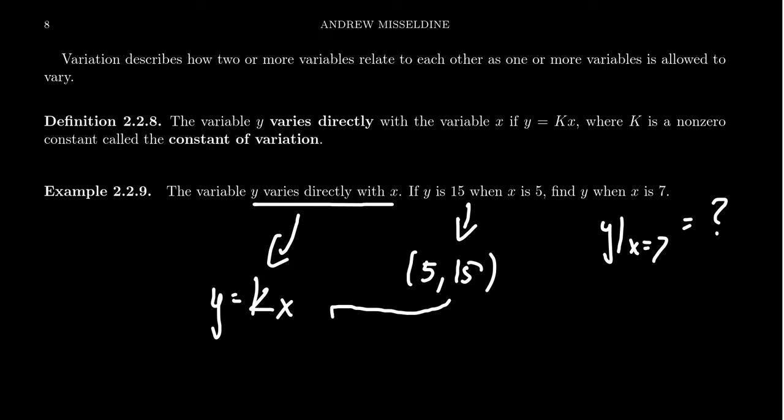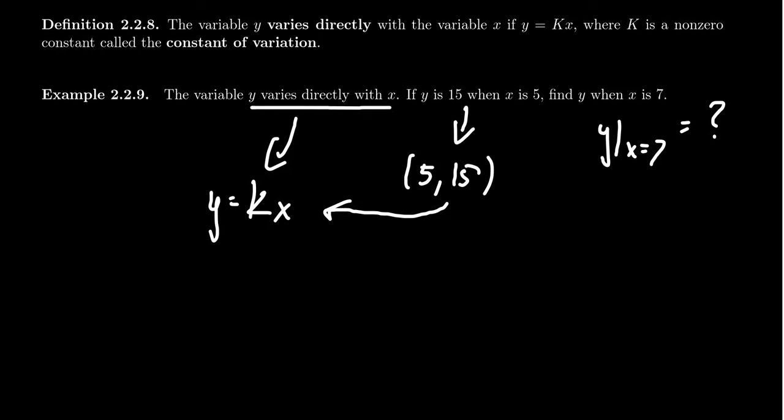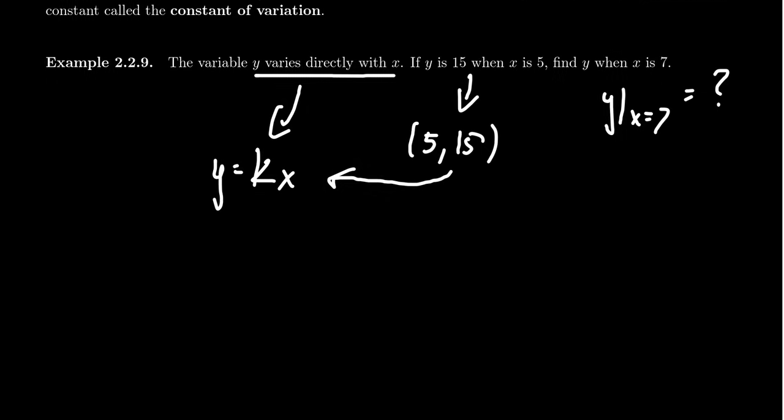So using the data point here, we can actually use this to solve the coefficient of variation. So when x equals 5, we're going to get k times 5 equals 15. That's the y-coordinate. Divide both sides by 5. We see very quickly that the coefficient is going to be 3.